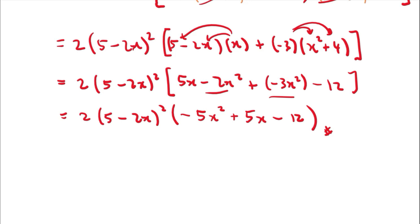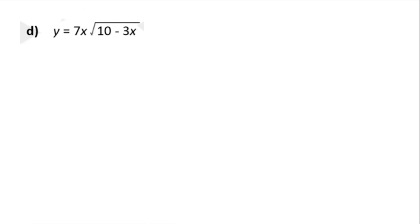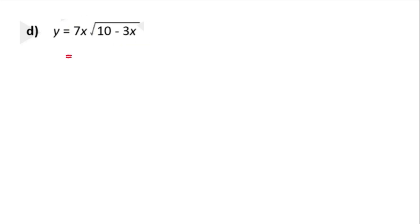Feel free to rewind and go through it again. Now let's try a simplified version of this whole process — it is the same thing. We have y equals 7x multiplied by the square root of (10 minus 3x). First, rewrite the square root as (10 minus 3x) to the power of one half. Now we are ready to differentiate.